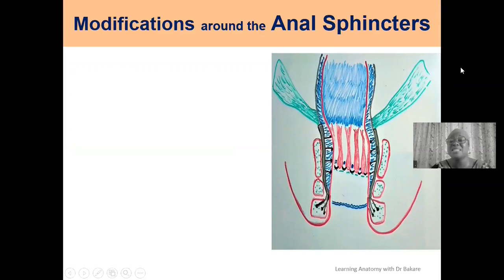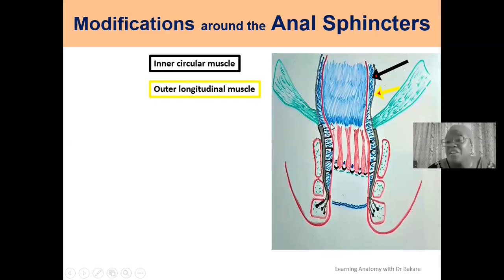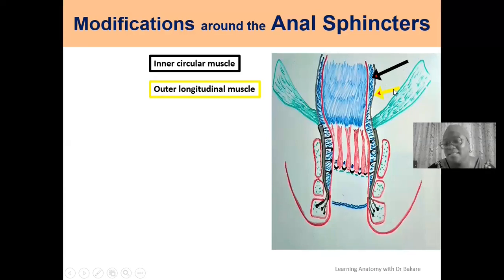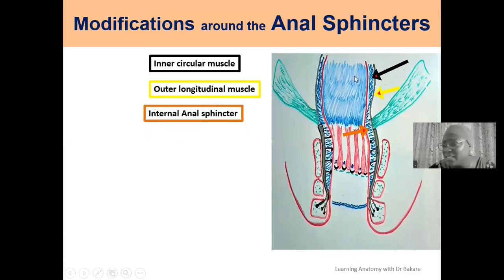There are some modifications seen around the anal sphincters. We have the inner circular muscle and, external to it, the outer longitudinal muscle — the muscular layer of the gastrointestinal tract, which also includes the rectum and anal canal. The inner circular muscle extends continuously downward along the wall of the anal canal, transforming to become the internal anal sphincter.